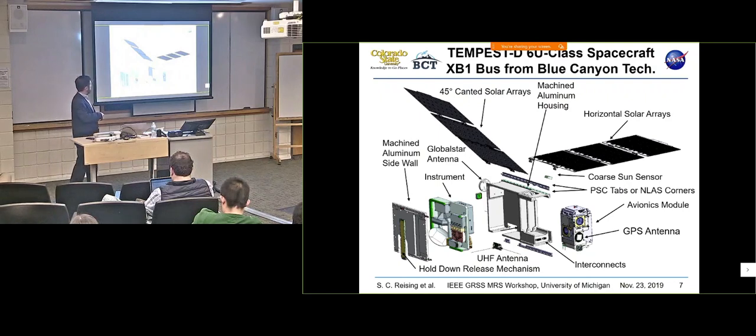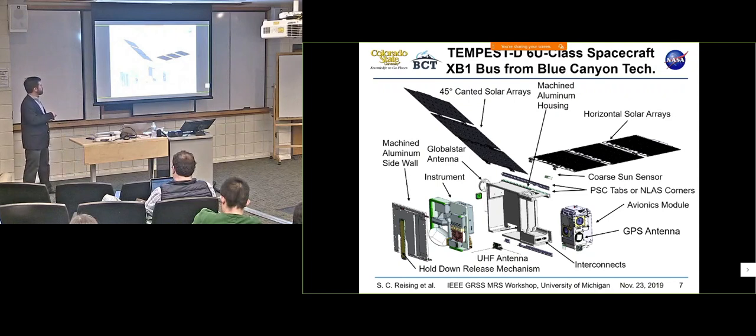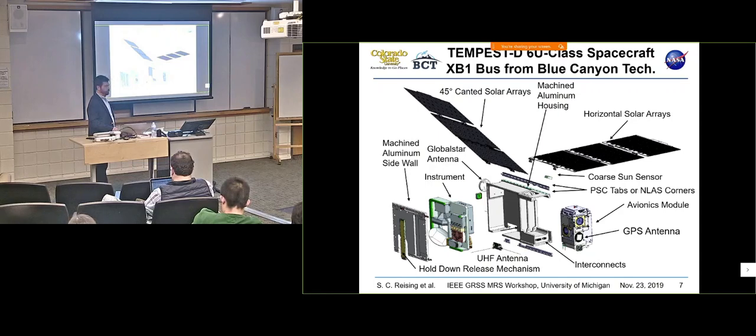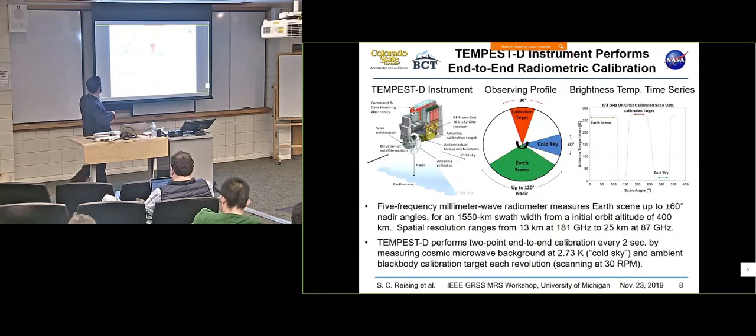We charge the battery with five solar panels. Five out of these six are populated for the solar arrays. One is horizontal and the other is up at 45 degrees. And here's the 4U size instrument. We have UHF for our primary ground communications. We can get some information through Global Star as well.